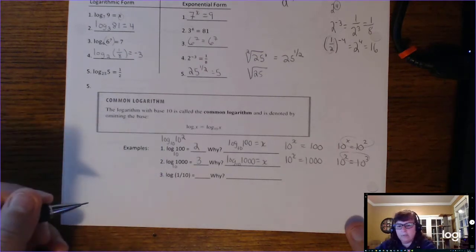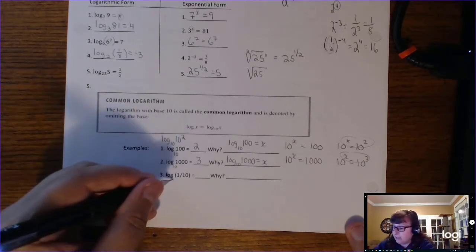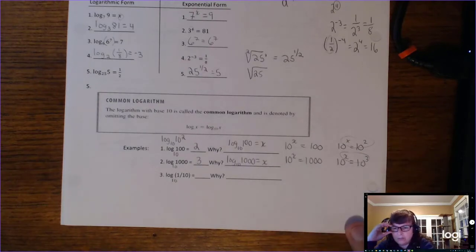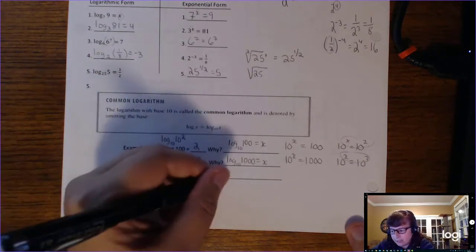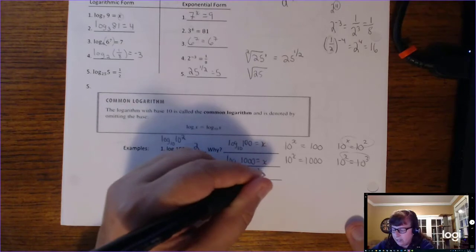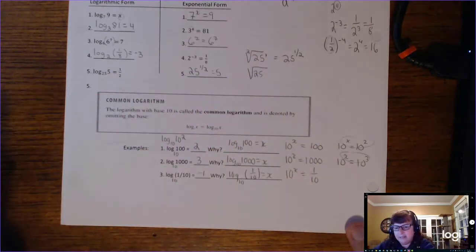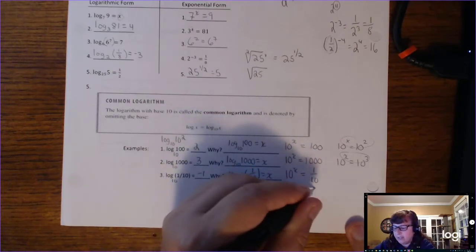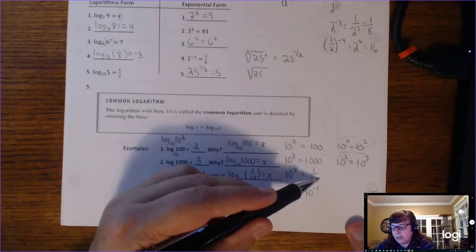What about the log of 1 over 10? This is where negative exponents come in handy. 1 over 10 can be rewritten using negative exponents — this is actually negative 1. Log base 10 of 1 over 10 equals x means 10 to the x equals 1 over 10. Since 1 over 10 is 10 to the negative 1, x equals negative 1.